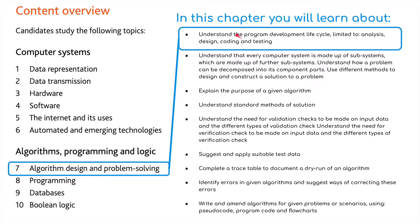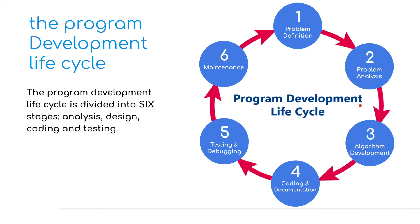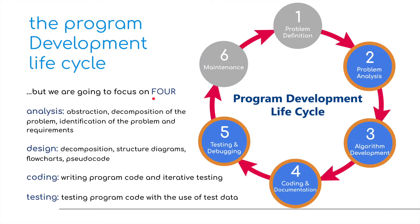For this first video we're going to be looking at ways to understand the program development lifecycle, but we're going to limit this to the analysis, the design, the coding and the testing. This is the program development lifecycle and as you can see it's broken up into six stages: program definition, problem analysis, algorithm development, coding and documentation, testing and debugging, and maintenance. But we're going to break this down into four.